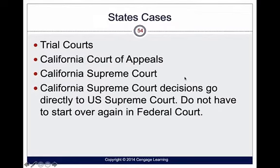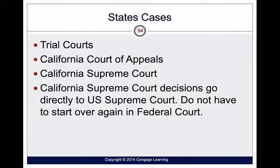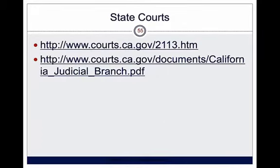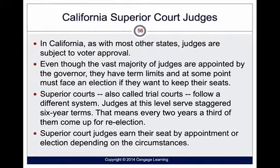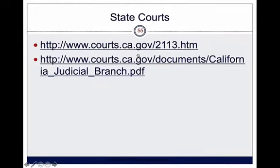With state cases, it goes from trial courts, then to the California Court of Appeals, then the California Supreme Court — which only deals with California law. If necessary, California Supreme Court decisions can be directly appealed to the United States Supreme Court. Remember, they do not have to start over in federal court, but all remedies must be exhausted before applying directly to the Supreme Court.